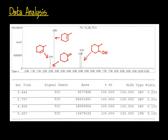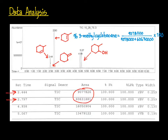Once you've identified the peaks corresponding to the major products of the reaction, you can determine their relative percents from the area values. In this example, the peaks are at 2.44 minutes and 2.8 minutes. We express their relative percents by taking the area of each peak, rounded to an appropriate number of significant figures, dividing by the sum of the areas of both, and multiplying by 100. So the percent of 3-methylcyclohexene would be calculated as 9,078,000 divided by (9,078,000 plus 60,630,000) times 100, which comes out to be 13.02%. The percent of 1-methylcyclohexene would be calculated in an analogous manner.